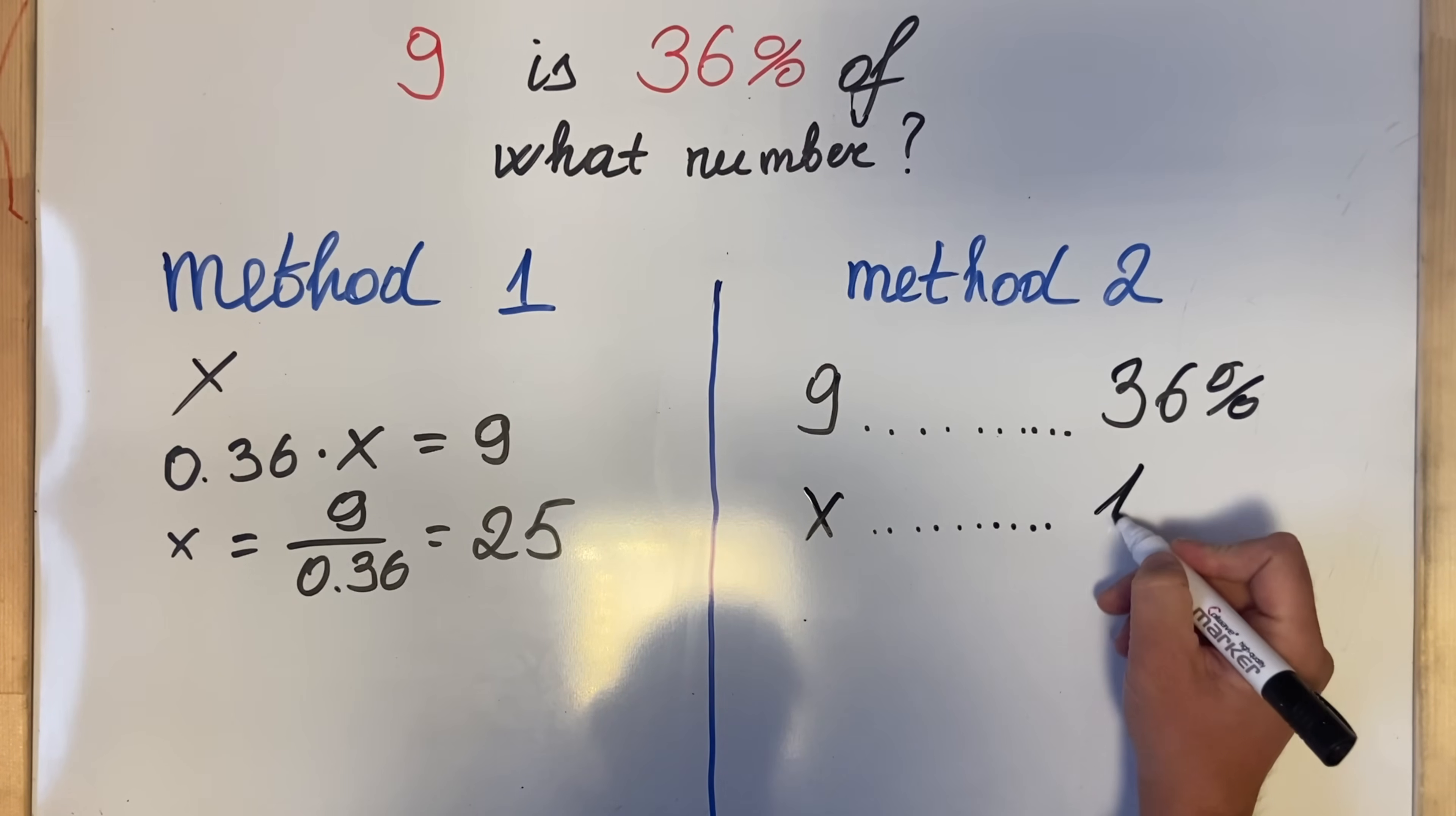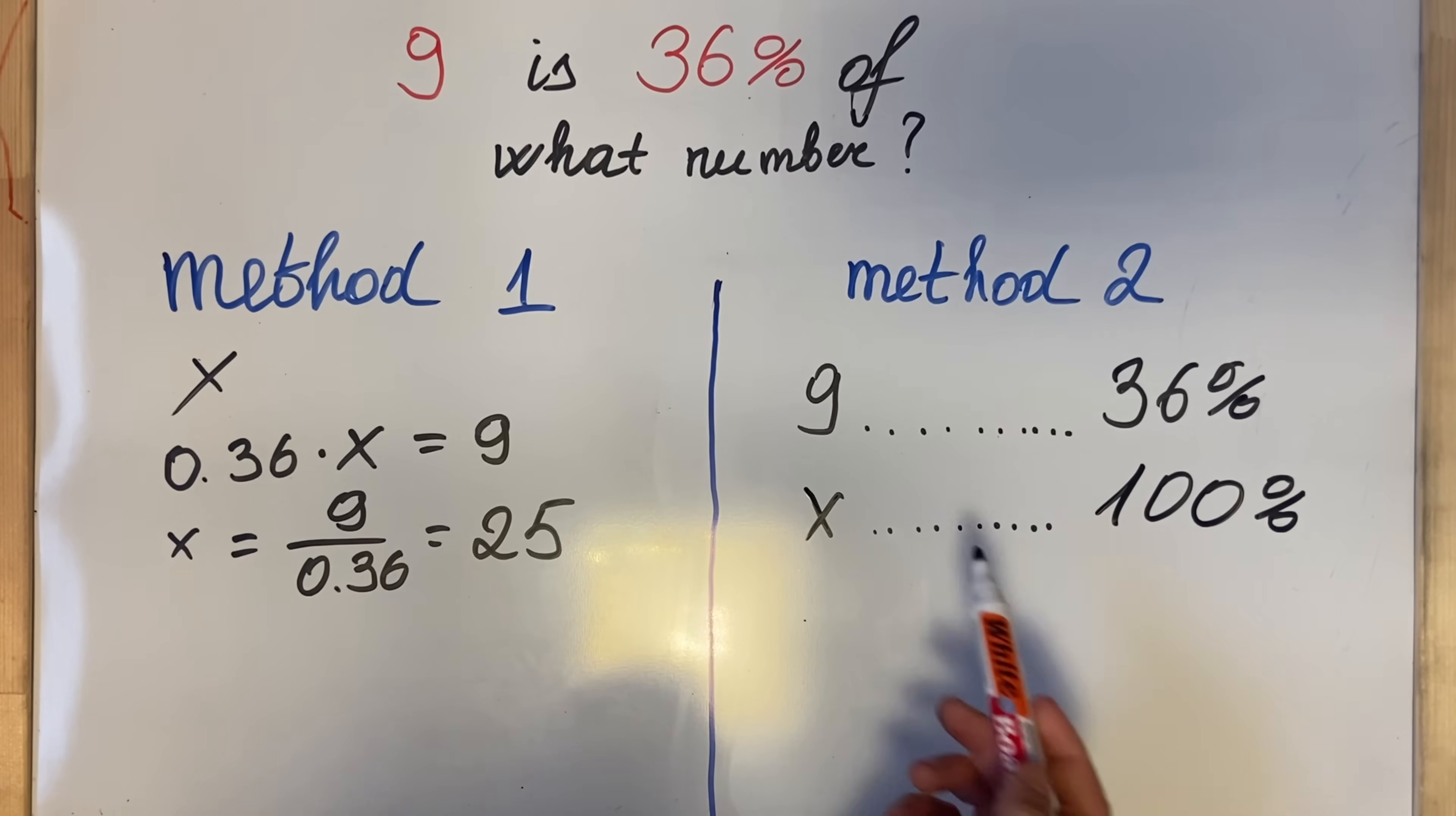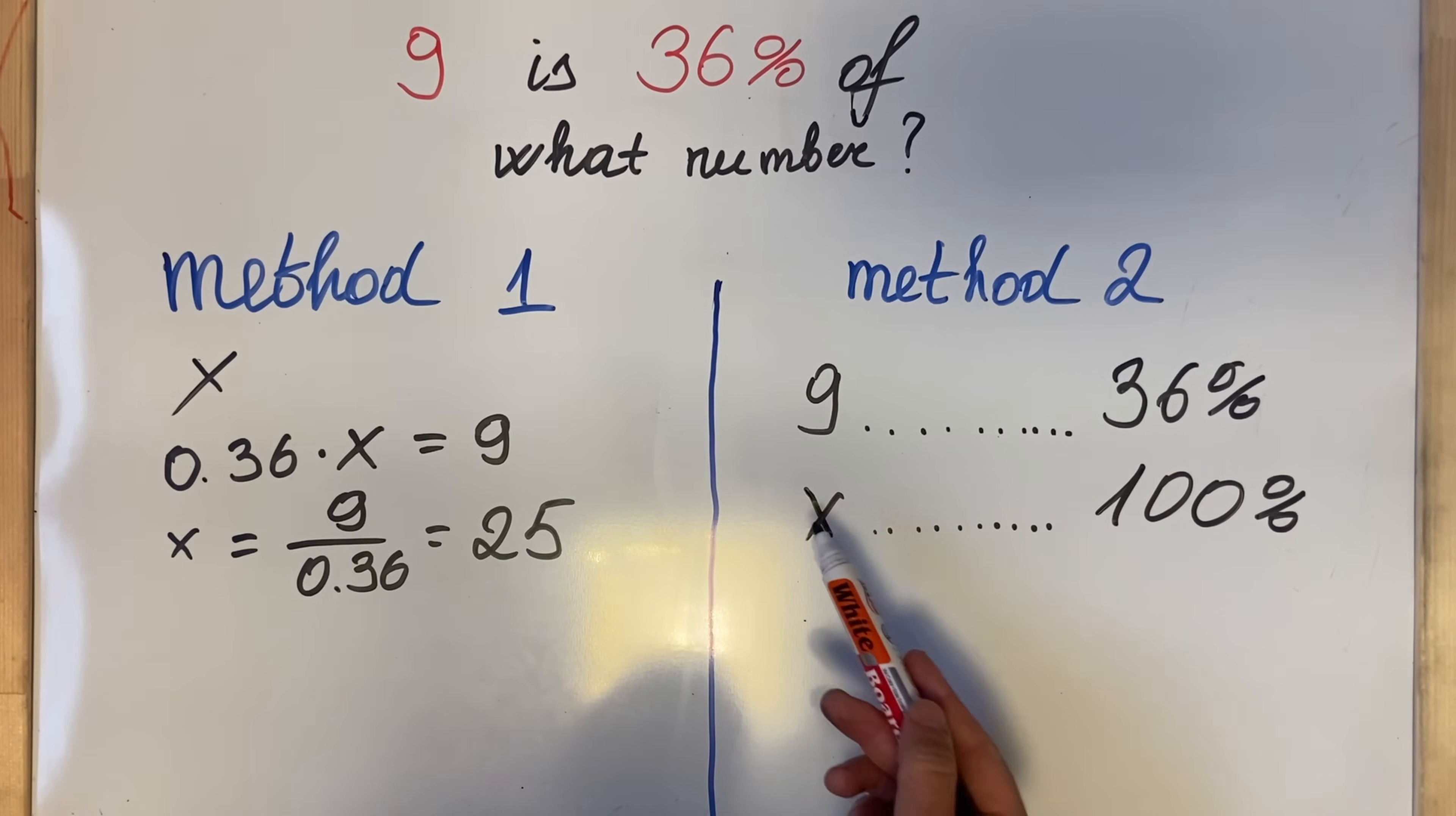So what I do is the proportion: I multiply 9 by 100, then divide it by 36. In this way I can find x. You can apply this to everything—basically you put what you know and you need to identify what's 100%, or the other way around.